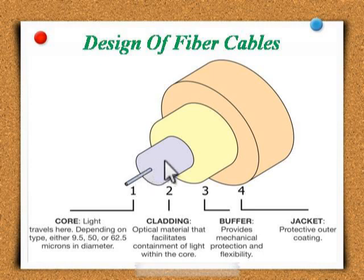The second one is the cladding. The layer on the outer side of the core is known as the cladding. It is usually made up of glass or sometimes plastic with a lower refractive index than the core. The interface between the core and cladding is responsible for refracting the light back into the cable.